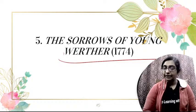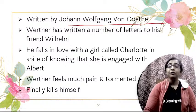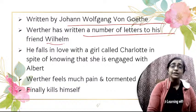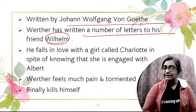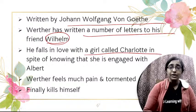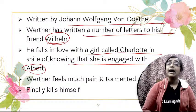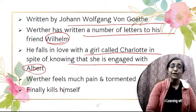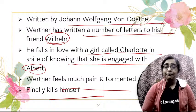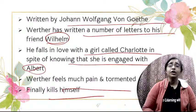Next is The Sorrows of Young Werther, published in 1774, written by Johann Wolfgang von Goethe. It is actually an epistolary novel in which Werther has written a number of letters to his friend Wilhelm. He falls in love with a girl called Charlotte, in spite of knowing that she is already engaged with another man called Albert. As a result of this unrequited love, Werther feels great pain and torment, and finally kills himself.